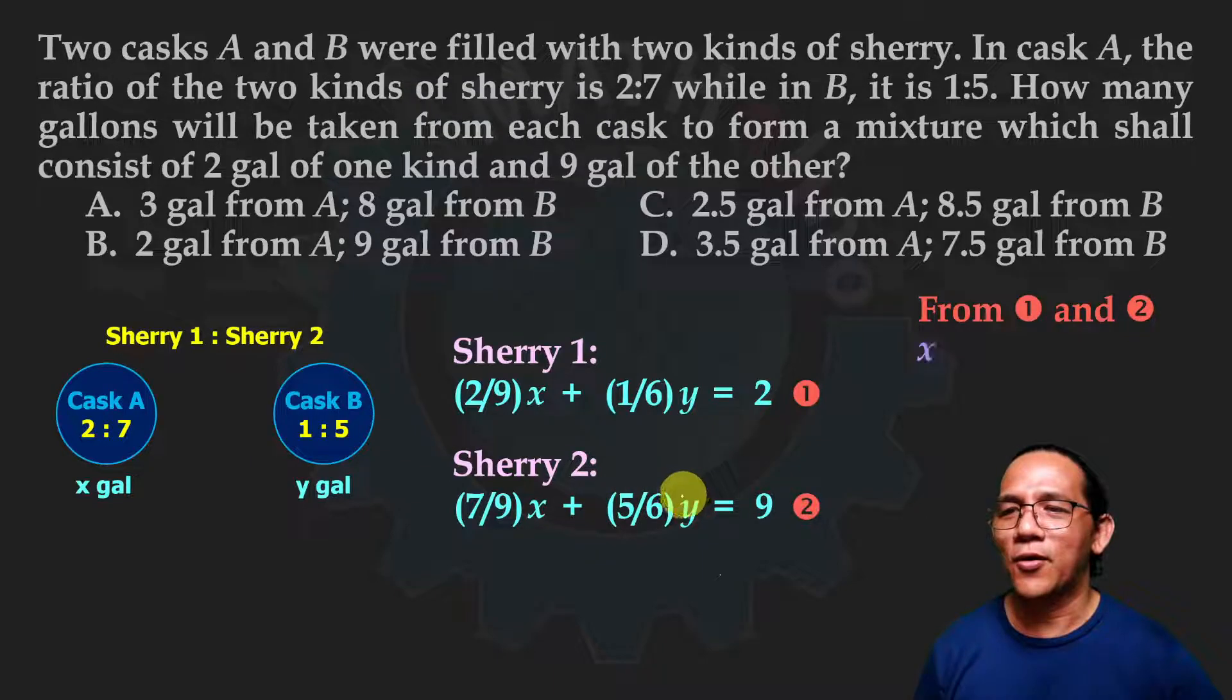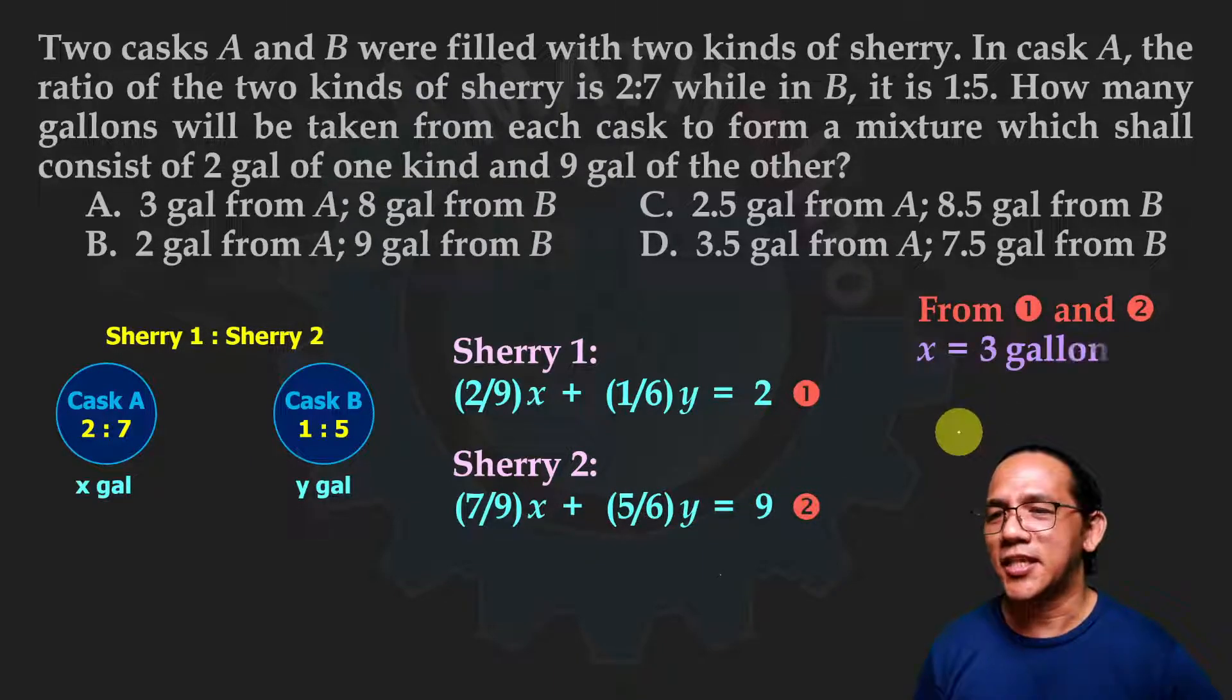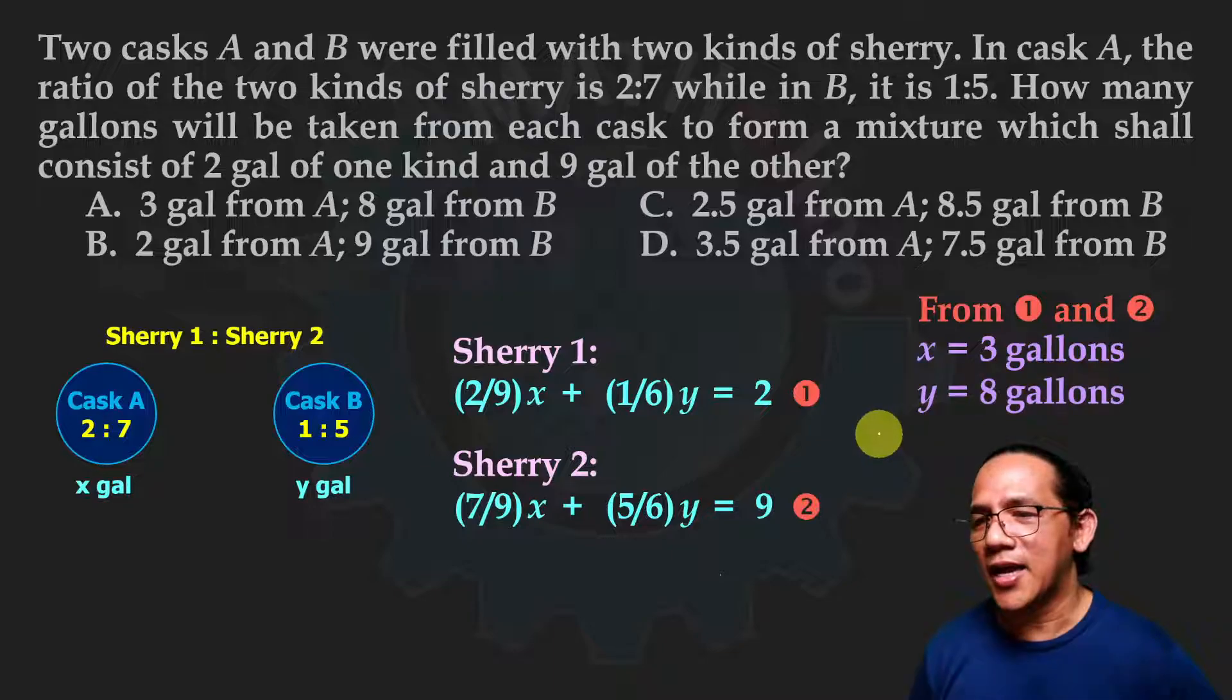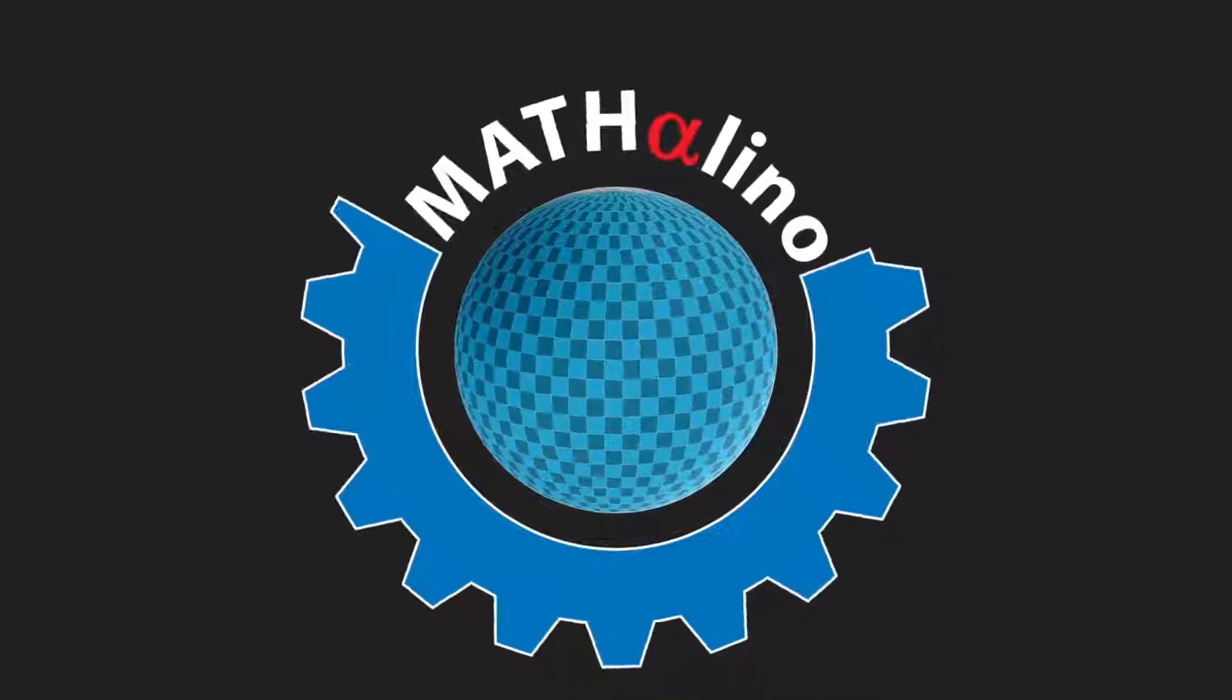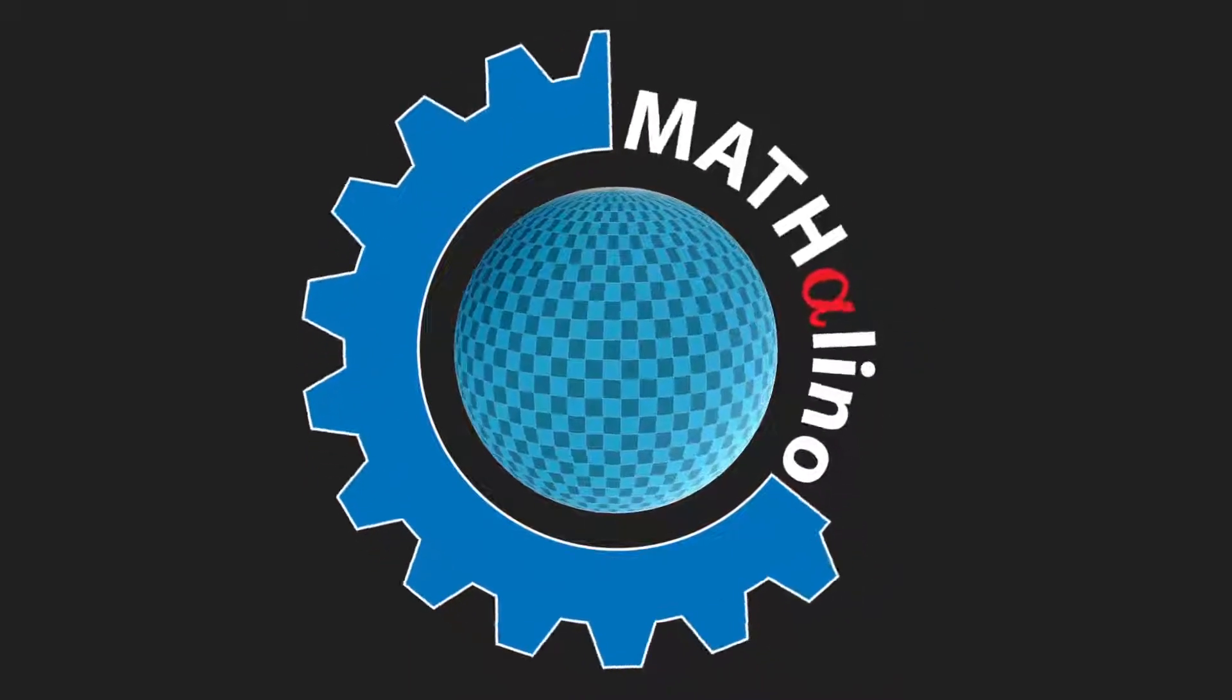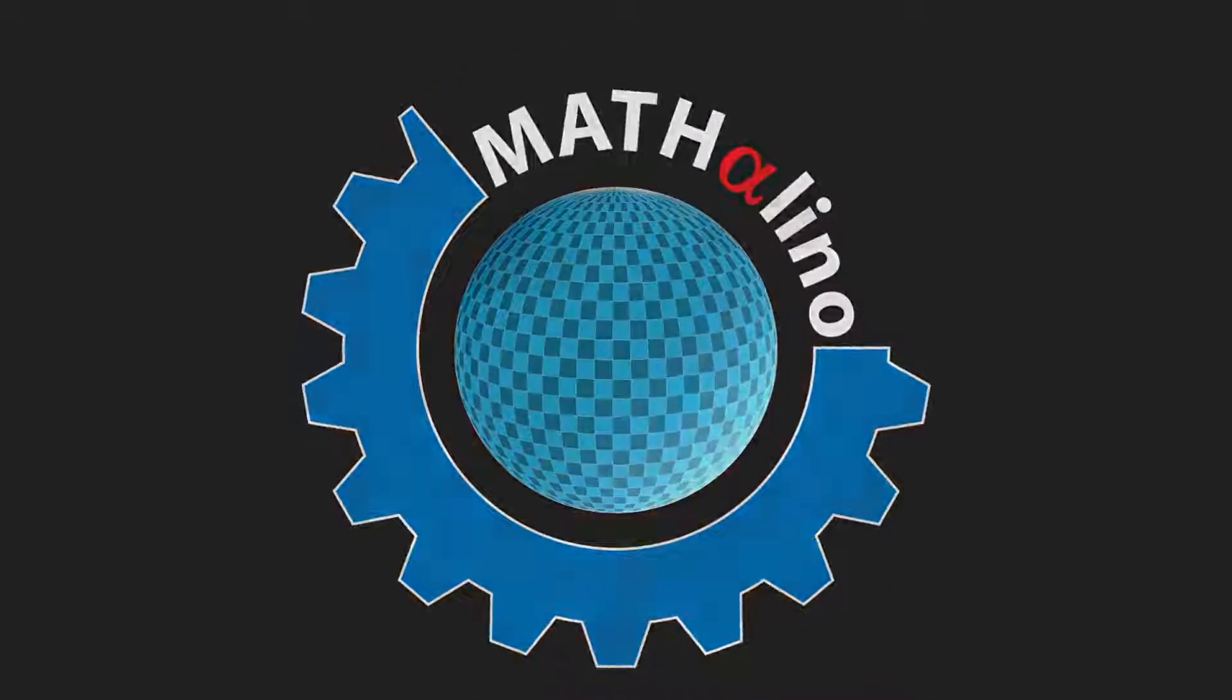Solve equation number one and number two. We get x equals three gallons and y equals eight gallons. This means our answer is letter A. Thank you for watching. I hope you learned something. Have a good day. See you in our next video. Bye-bye.